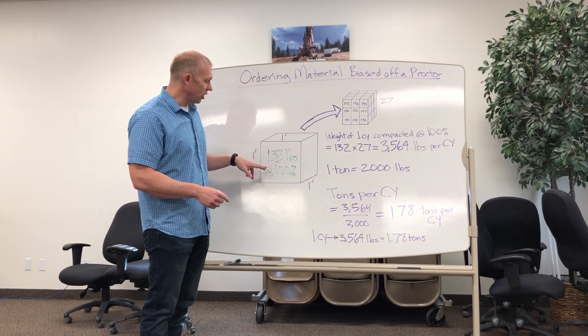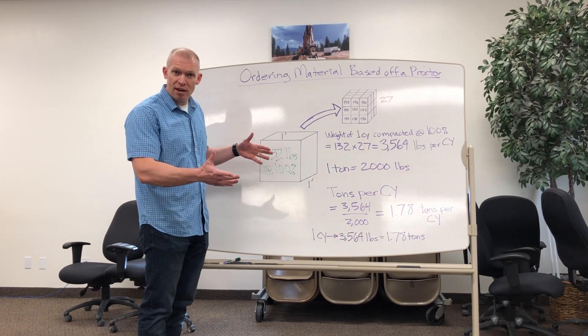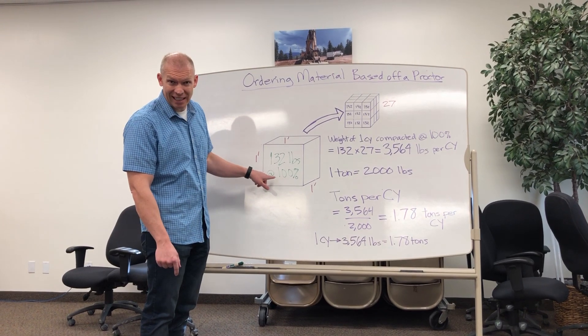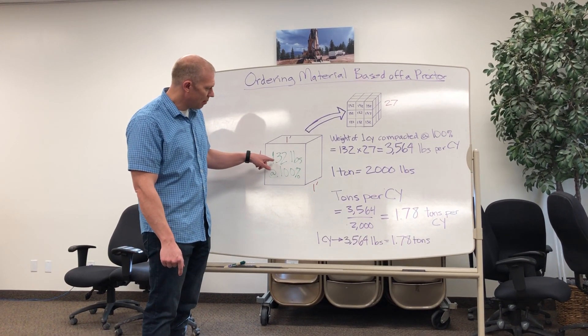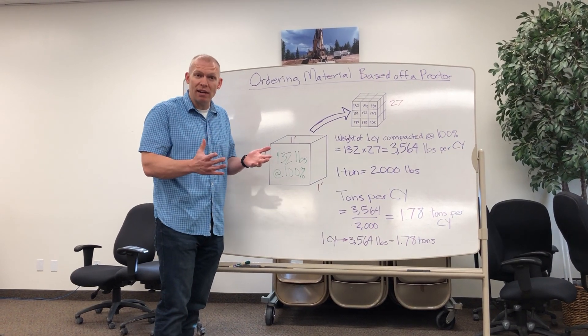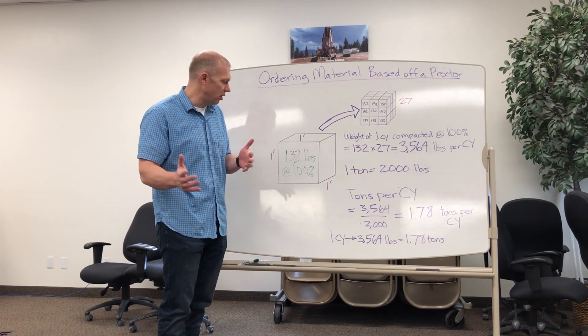So this is one cubic foot. If you took a particular kind of material and you compacted it at 100%, this particular kind of material would weigh 132 pounds. A proctor is telling us the weight of the material compacted at 100% in one cubic foot.